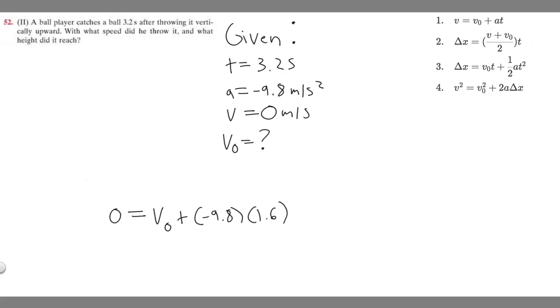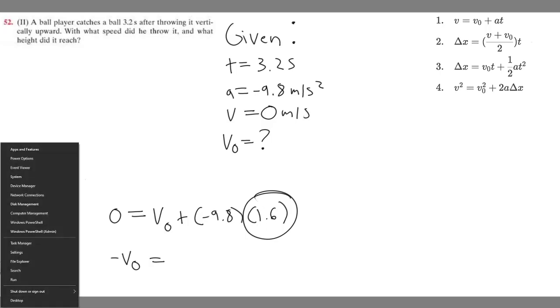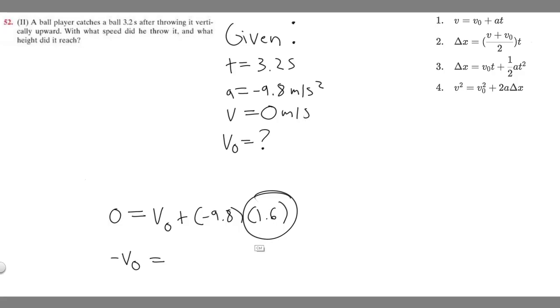We're going to move V sub 0 to the other side. So minus V sub 0 is equal to minus 9.8 times 1.6. And so if you do minus 9.8 times 1.6, you're going to get minus 15.68.